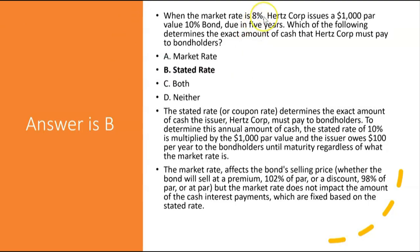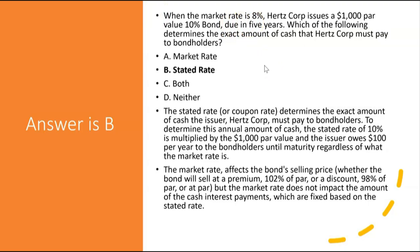The market rate affects the bond selling price — whether it sells at a premium, discount, or par — but does not impact the cash interest payment, which is fixed based on the stated rate. With the market rate at 8% and the stated rate at 10%, Hertz Corp's 10% bond is at a premium to the market rate of 8%, so this bond will sell at a premium. Hertz Corp pays cash interest based on the 10% stated rate, but the true percentage cost of borrowing is only 8%.